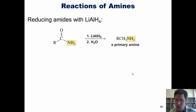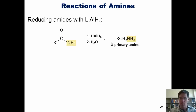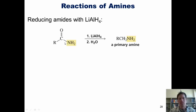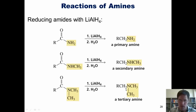Let's go back to lithium aluminum hydride, now focusing on amides. When we react amides with lithium aluminum hydride, a slightly different product is formed: an amine. Lithium aluminum hydride reduces carboxylic acids and esters all the way down to primary alcohols, but in contrast, it reduces amides down to amines. Sodium borohydride is not powerful enough to reduce amides to amines. A primary amide treated with LiAlH4 gives a primary amine; a secondary amide gives a secondary amine; a tertiary amide gives a tertiary amine.